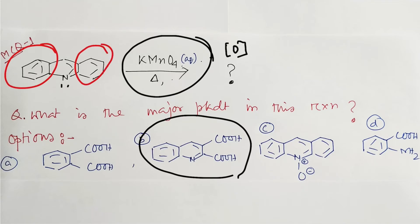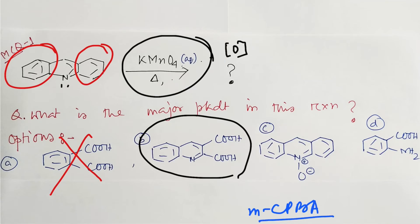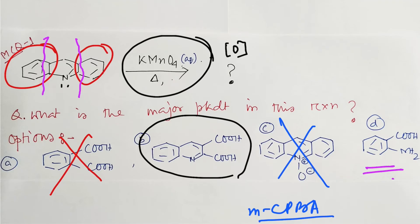KMnO₄ is a selective reagent responsible for side-chain oxidation, not N-oxide formation — for N-oxide formation you need mCPBA-type reagents. So the N-oxide option is eliminated. Two options remain. Side-chain oxidation occurs on the electron-rich nucleus, so pyridine remains intact — eliminating the option that breaks the pyridine side. That leaves one option: oxidation of the two benzene rings to dicarboxylic acids, retaining the pyridine.